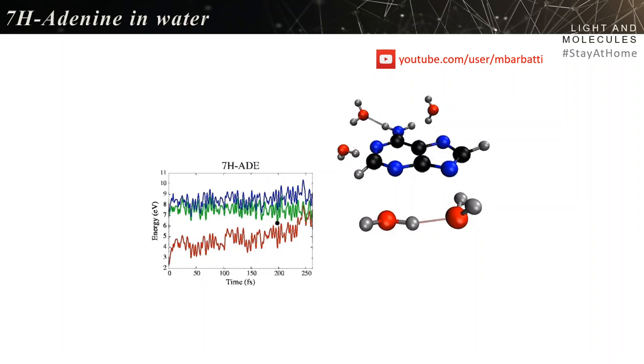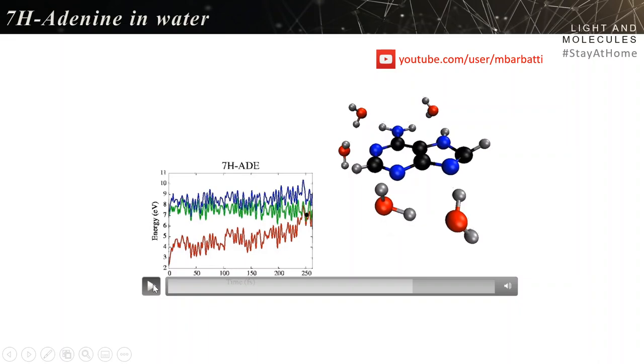The water is in the QM part as well. When it comes to the intersection to the ground state, it's surprising. I was expecting to see something very similar to what I saw in 9H adenine in the gas phase - the puckering, the out-of-plane motion of the hydrogen or carbon atom. But here the molecule is just planar. There's nothing there.